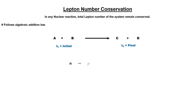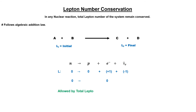Now consider the neutron decaying into a proton, electron, and anti-neutrino. Since anti-neutrino is an anti-lepton particle, its lepton number is −1, while neutron and proton are non-leptonic with lepton number 0, and the electron's lepton number is +1. The lepton number is now conserved in this reaction, so this reaction is allowed according to lepton number conservation.